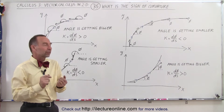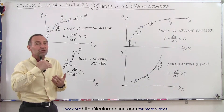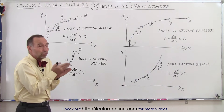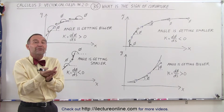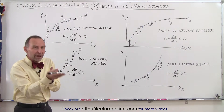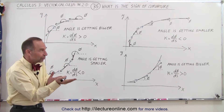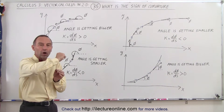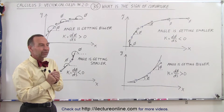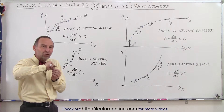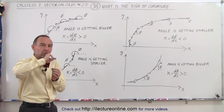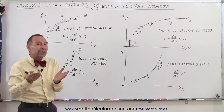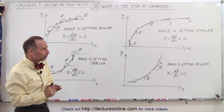It depends on two things. First of all, the direction of travel on the curve, which is really important, which then determines how you find the angle between the positive x-axis and the unit tangent vectors along the curve. Secondly, you need to see as you travel in the direction of travel, whether those angles get bigger or those angles get smaller.